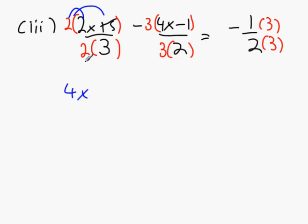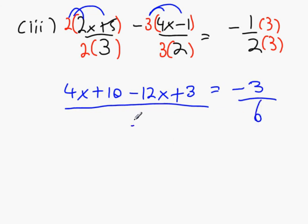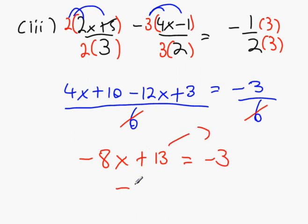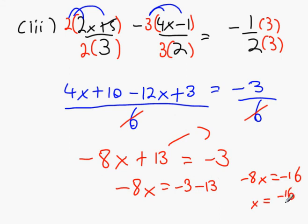Now here's your mistake. 2 times 2x, 4x. 2 times 5, 10. 3 times 4x, minus 12x. Minus 3 times minus 1, plus 3. 3 times minus 1, minus 3. It's all over 6. Cross out the 6's. 4x minus 12x, minus 8x. 10 plus 3, 13 equals minus 3. Bring that 13 to the other side. Minus 3 minus 13. Minus 8x equals minus 16. And then x equals minus 16 divided by minus 8, which is 2. Now we've got x equals 2.